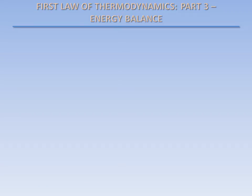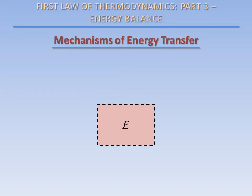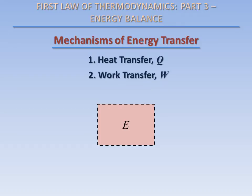So far, we've learned that a system contains some total amount of energy which can change if energy is transferred into or out of the system. There are three mechanisms by which energy can be transferred into or out of the system: heat transfer, work transfer, and mass flow.